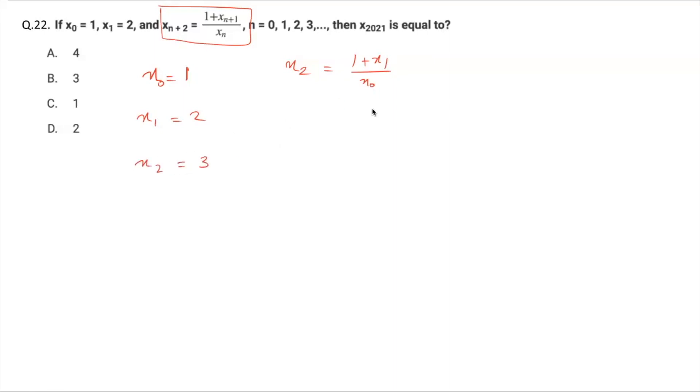Similarly, x₃ can be found as 1 plus x₂ divided by x₁. So x₃ will be 1 plus x₂ is 3, 1 plus 3 upon x₁ is 2, so x₃ will again be equal to 2. From here you can calculate x₄: 1 plus x₃ divided by x₂.